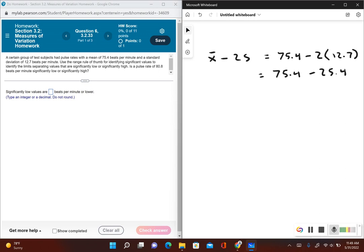Now, 75.4 minus 25.4, that's going to give us 50. So 50 beats per minute and lower are considered significantly low values.